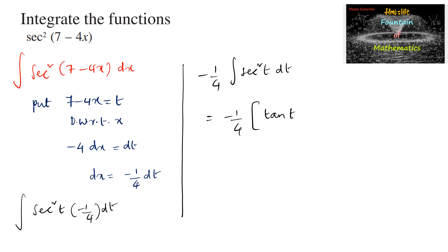So tan t plus c, that is minus 1 by 4 of tan of t, where t value is 7 minus 4x plus c. So minus 1 upon 4 tan of 7 minus 4x plus c is the answer.